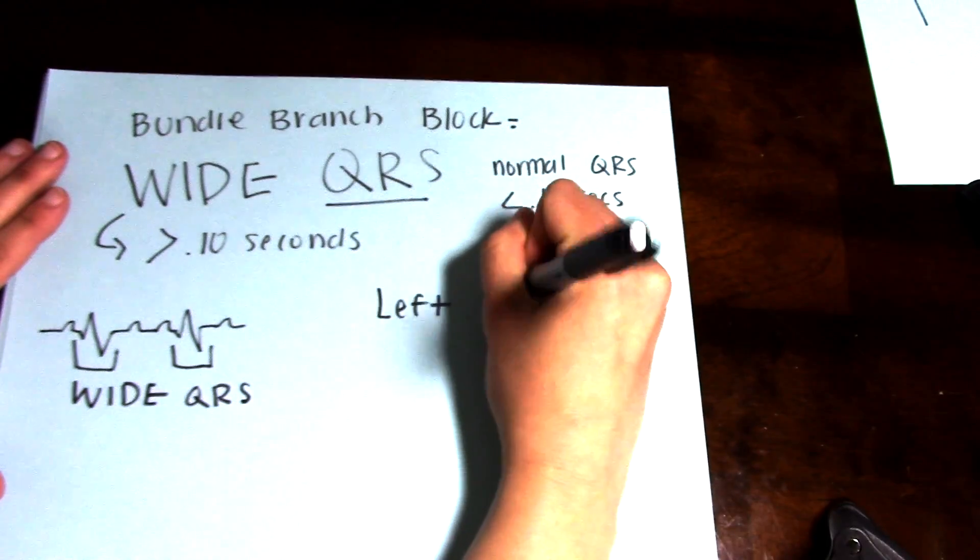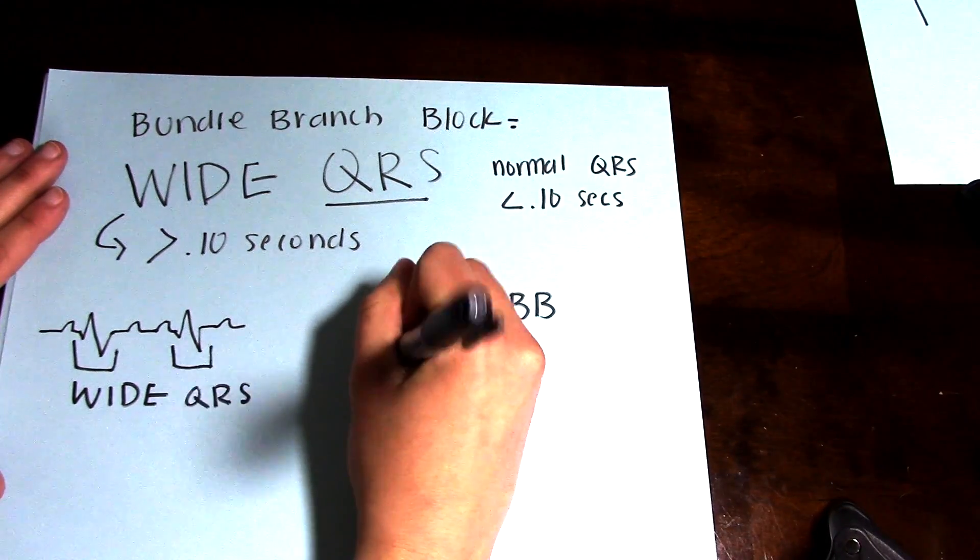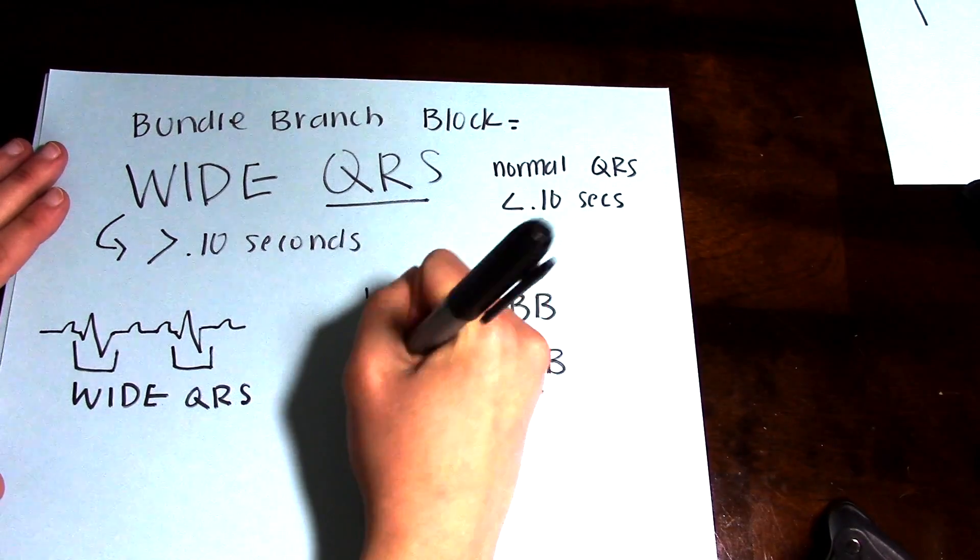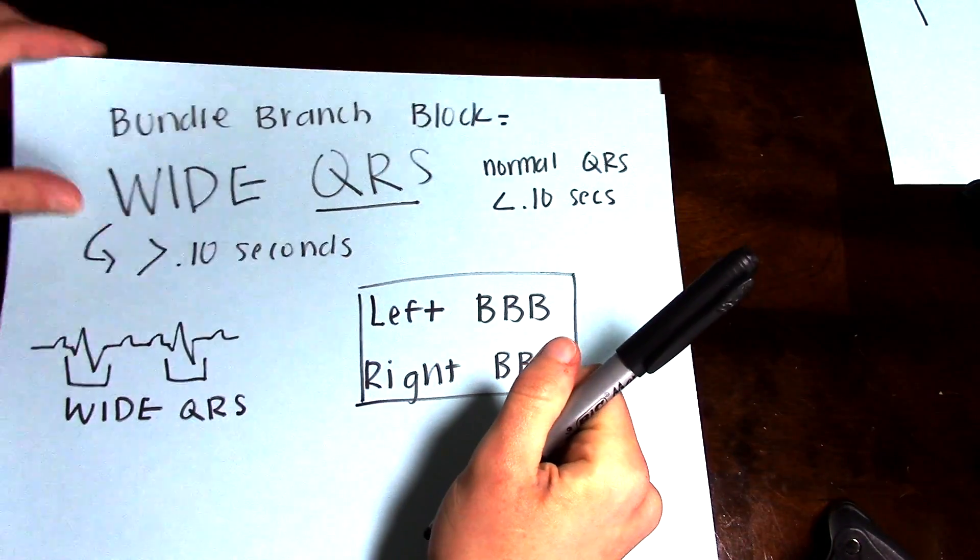There's also left and right bundle branch blocks. These both have wide QRSs but there are differentiating factors between the two which we are not going to get into in today's video.